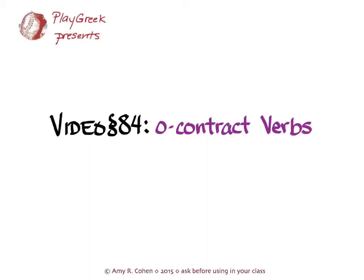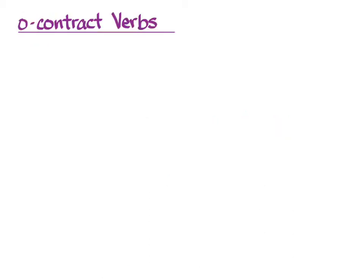This video goes with section 84 of Hanson and Quinn's Greek Intensive Course and covers omicron contract verbs. Hanson and Quinn discuss this on pages 264 to 268. We're going to cover the basic concept of omicron contract verbs and then the forms they take. If you're already familiar with the basic concept from our coverage of alpha contract and epsilon contract verbs, feel free to go on to the part where the forms actually start.